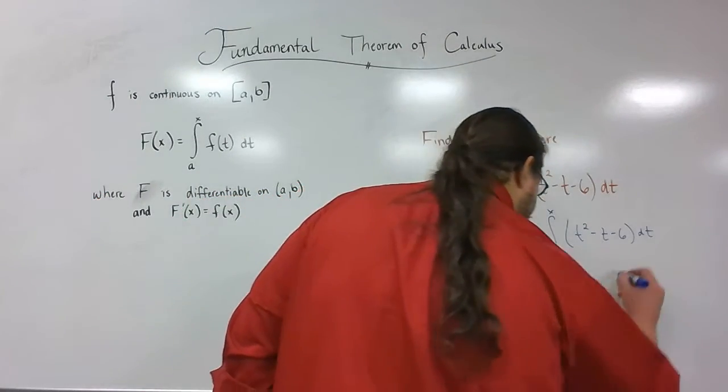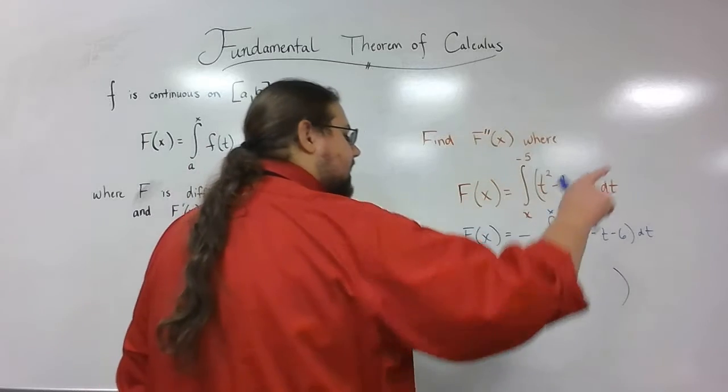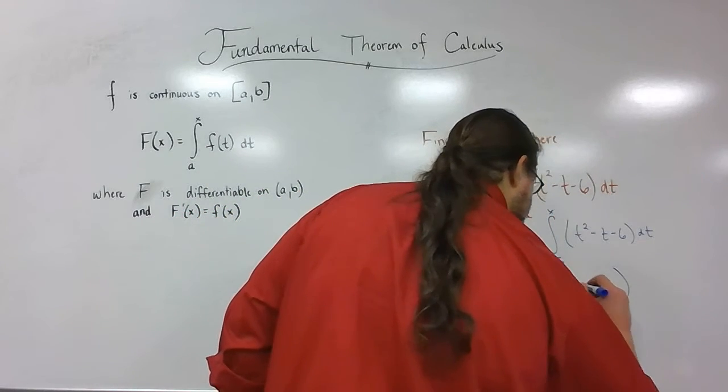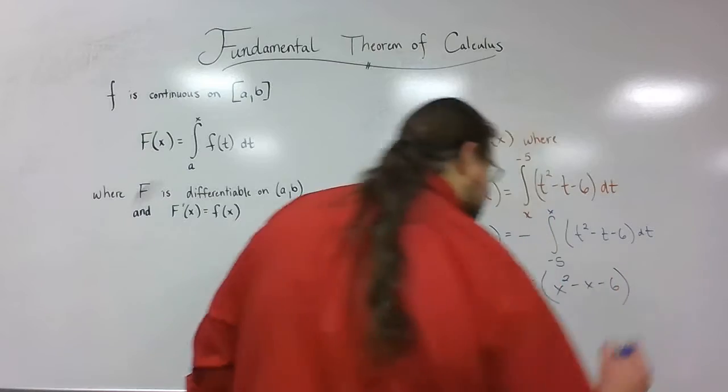So I'm going to carry down that negative, and then just kind of basically plugging in x. I'm going to get x squared minus x minus 6. All right?